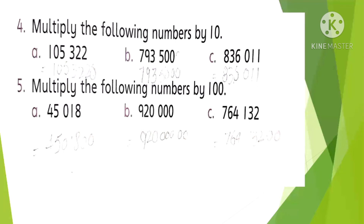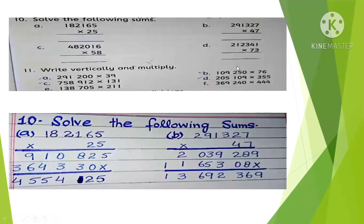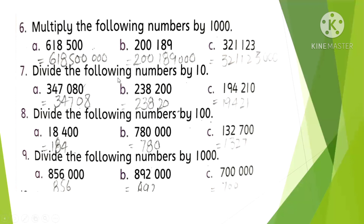Question 6: Multiply the following numbers by 1,000. When multiplying by 1,000, add three zeros on the right side — the number stays the same but three zeros are appended. Question 7: Divide the following numbers by 10. When dividing by 10, cancel one zero from the right side of the number. All three parts have one zero cancelled.